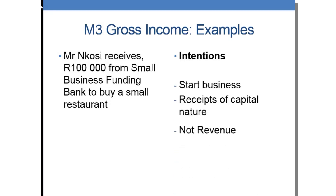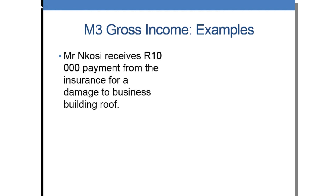Example 5 on intention: Mr. Ngozi received 100,000 rand from the small business funding bank to buy a small restaurant. The intention is to start a business — money to start a business is capital. Capital cannot be taxed, so it is not revenue in nature. Similarly, Mr. Ngozi received 10,000 rand from insurance for damage to the building. The building of a business is a capital asset, so it cannot be taxed — it is non-taxable.